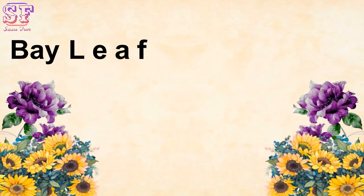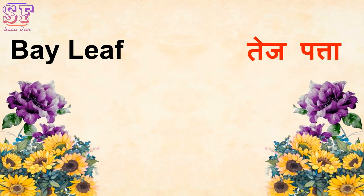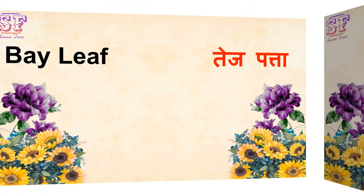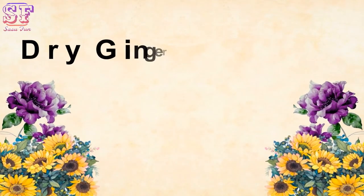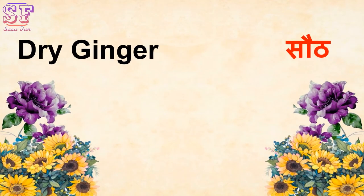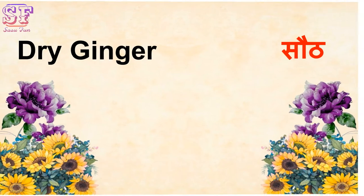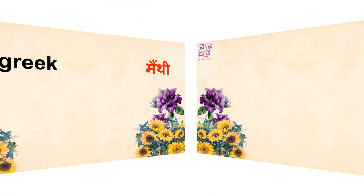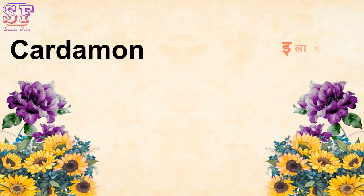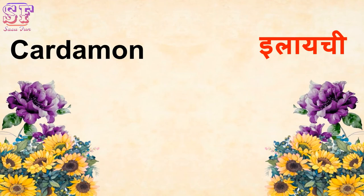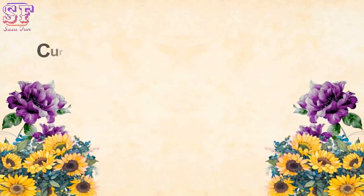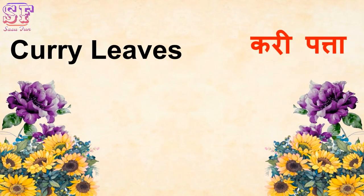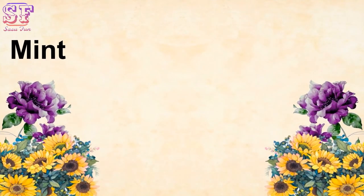Bay Leaf — Tejpatta. Dry Ginger. Fenugreek — Methi. Cardamom — Elaichi. Curry Leaves — Curry Patta.